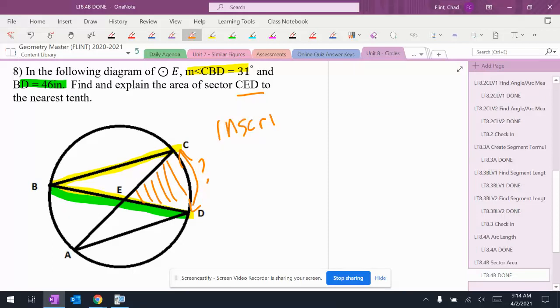If you remember that an inscribed angle is equal to half the intercepted arc, the intercepted arc is CD.